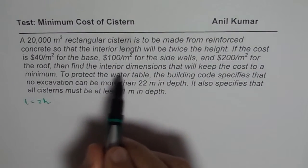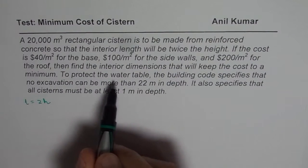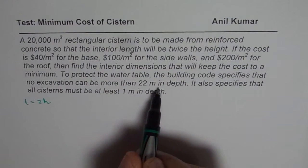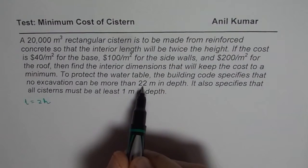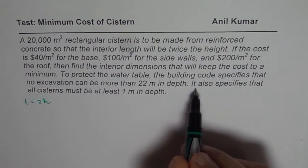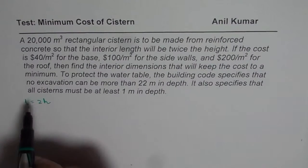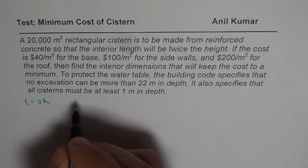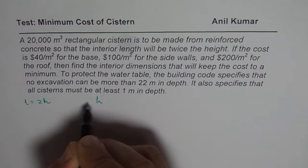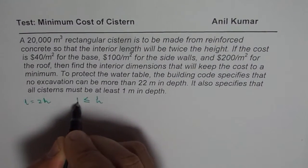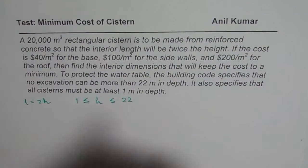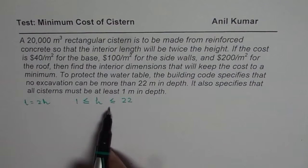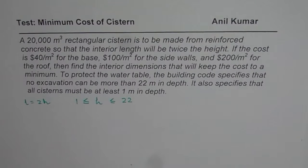It is important to make a diagram and understand this. To protect the water table, the building code specifies that no excavation can be made more than 22 meters in depth — that is the maximum height of this cistern. It also specifies that all cisterns must be at least 1 meter in depth. So height h has to be greater than or equal to 1 and less than or equal to 22 meters. This clearly indicates that we should get an equation in terms of height to solve this question.